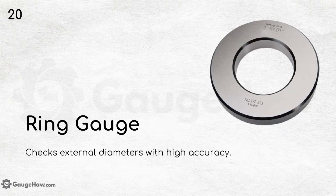Ring gauge. It checks external diameters with high accuracy. That is the proper function of a ring gauge.